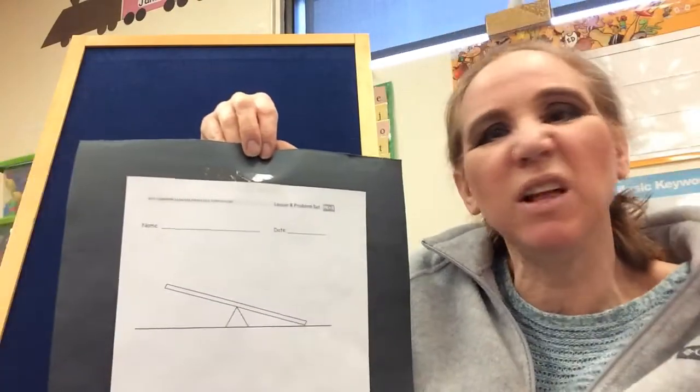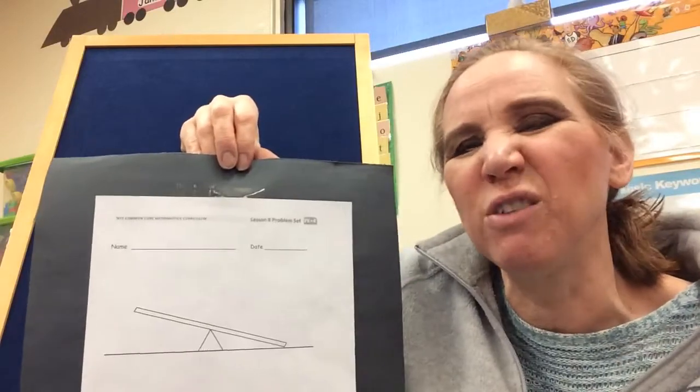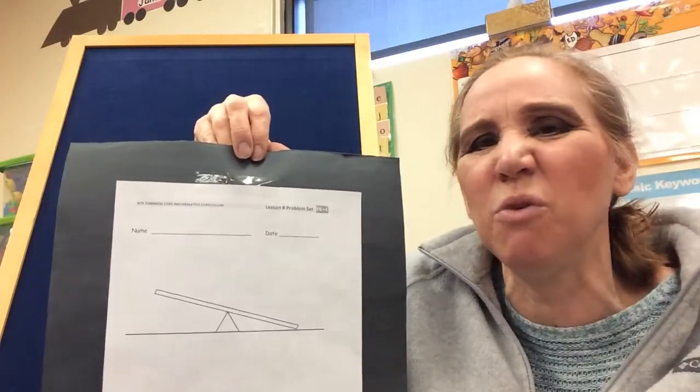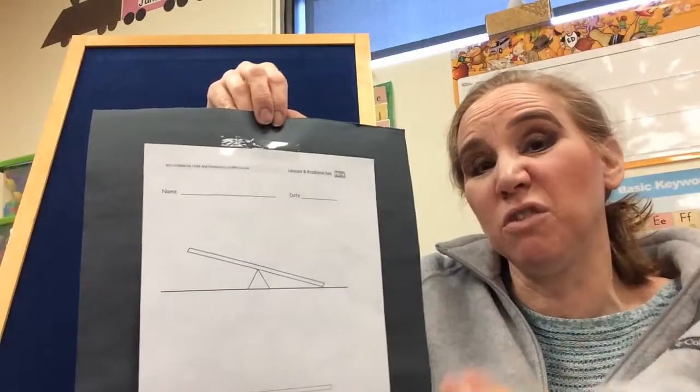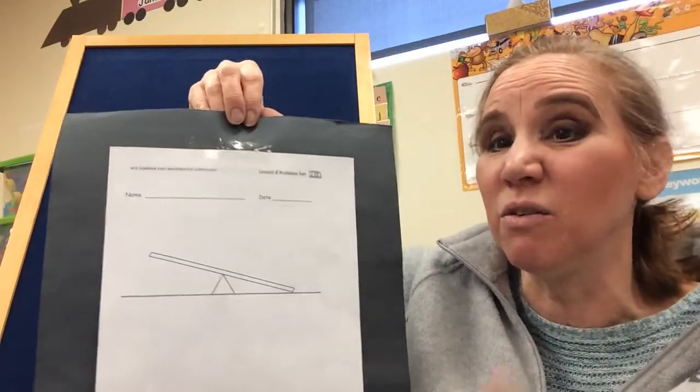You know when you hold something heavy, it falls to the ground. If you don't hold it, it'll fall to the ground. And for you to hold it off the ground, you have to use a lot of muscles. But something light, it'll fall to the ground too, but not as hard, and it won't make as big a noise. And it might even flutter to the ground. It might not fall straight down.